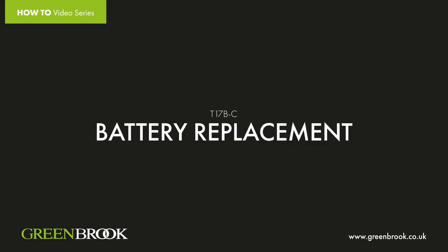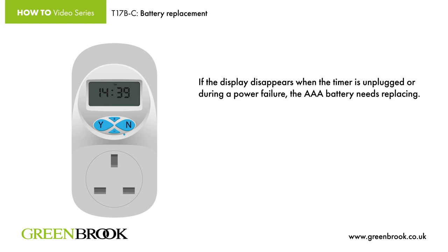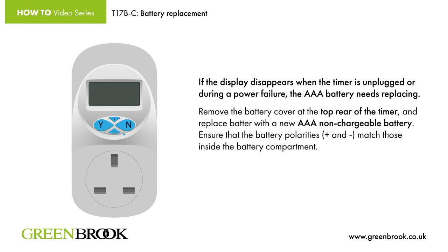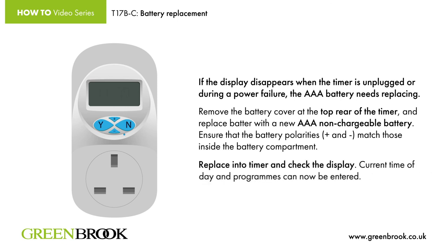Battery replacement. If the display disappears when the timer is unplugged or during a power failure, the AAA battery needs replacing. Remove the battery cover at the top rear of the timer and replace the battery with a new AAA non-chargeable battery. Ensure that the battery polarities — plus and minus — match those inside the battery compartment. Replace the timer and check the display. Current time of day and programs can now be entered.